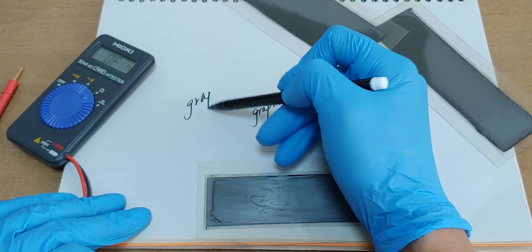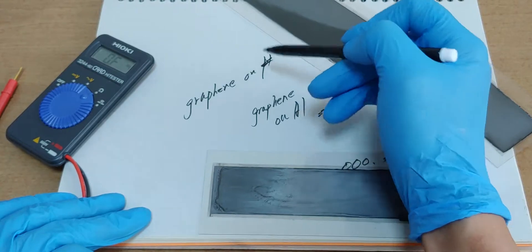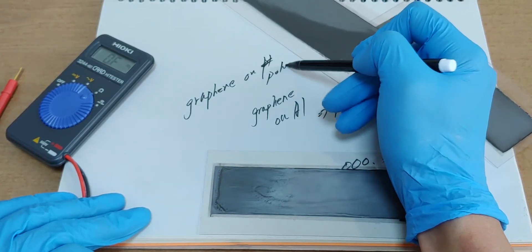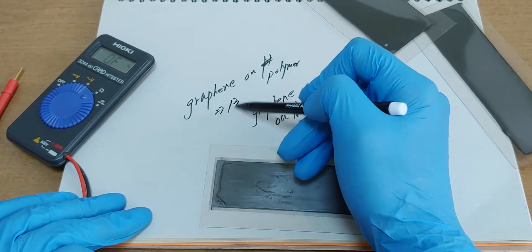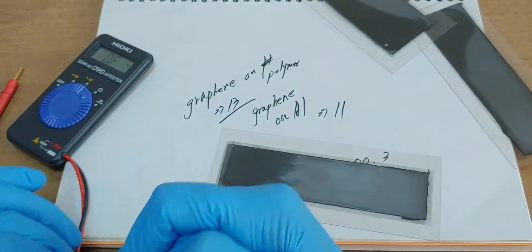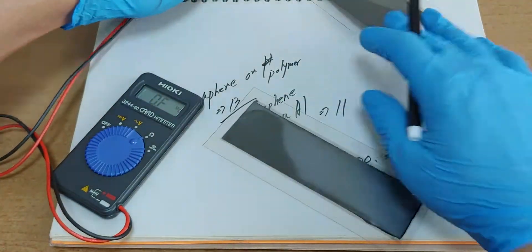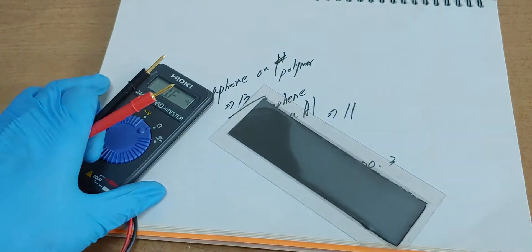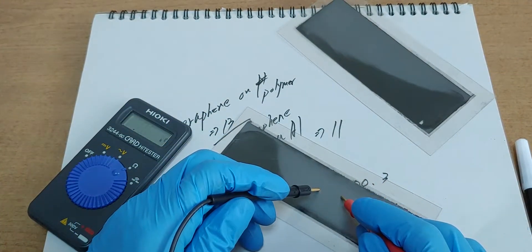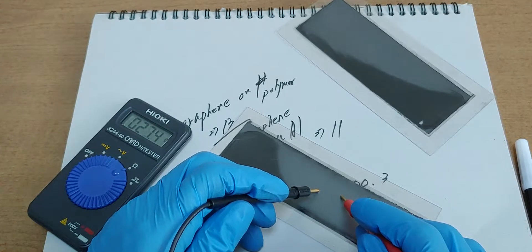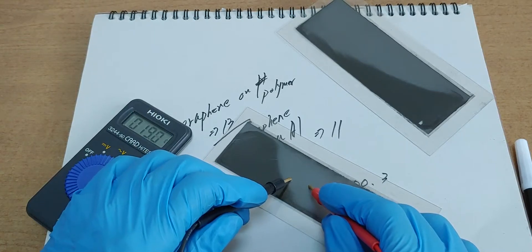Graphene on plastic. We can see a polymer. It's 13. How about this one? Very high. 27, 20, 19.